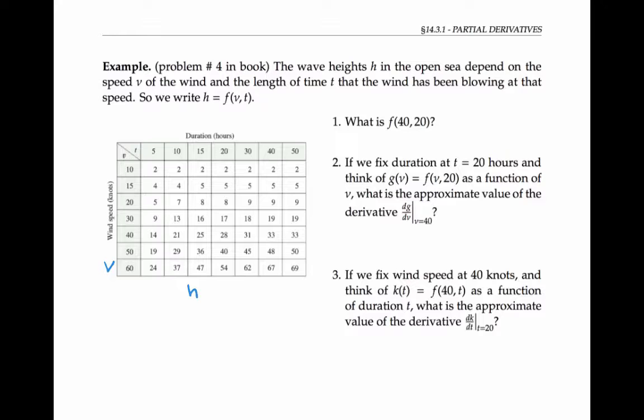And the duration t in hours that the wind has been blowing at that speed. If we want to compute f of 40, 20, that means the wind speed is 40 knots has been blowing at that speed for 20 hours.